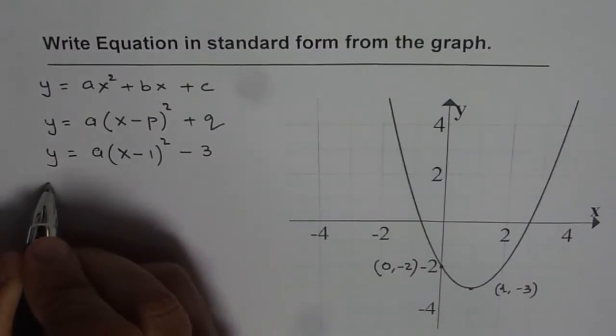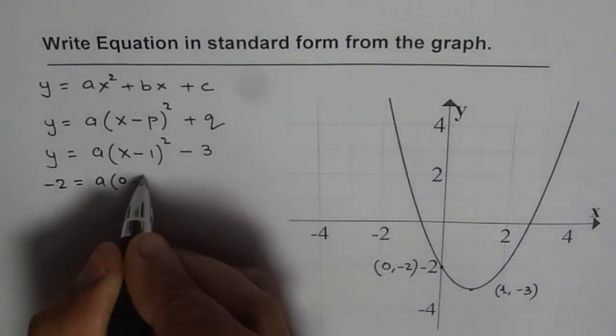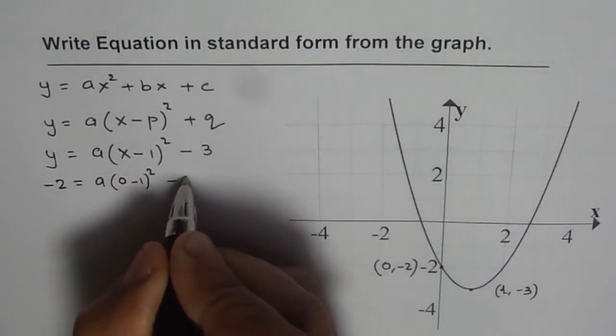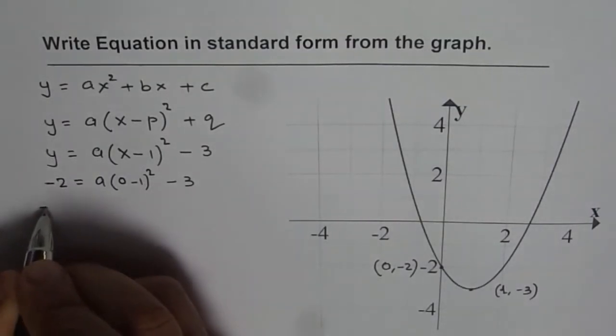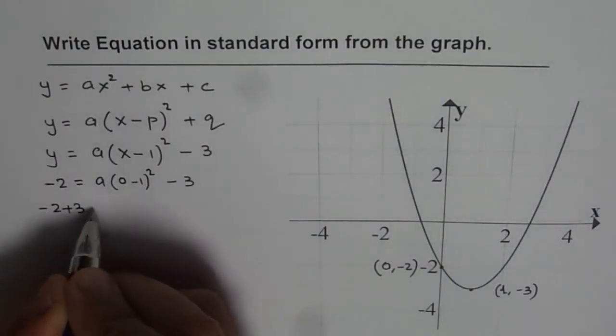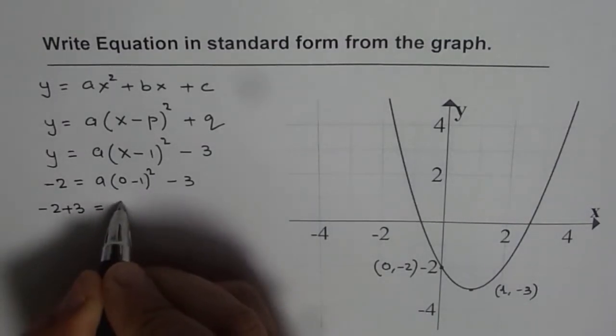Substituting -2 for y, we get -2 = a(0 - 1)² - 3. So that gives us, we will bring 3 on this side. So it is -2 + 3 is equal to, (-1)² is 1 is equal to a.